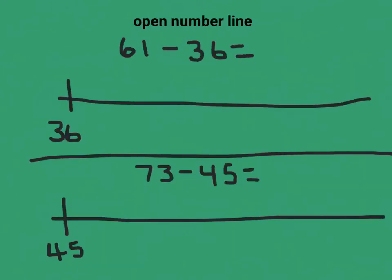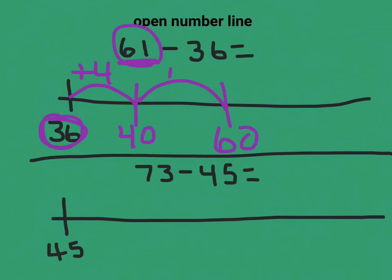Here's another way to solve a subtraction problem on an open number line. On this one, we're going to start at 36 and jump up to 61. So I'm going to use friendly tens to get there. When I think about 36, I think to myself, what's the next 10? The next 10 is 40, and I jumped four to get there. I'm trying to get to 61. So now I'm at 40. I can jump 20 more, and that places me at 60. If I jump one more, I've reached my goal number which is 61. I go back and count all of my jumps. So my jumps are 20 and 4, that's 24, and one more is 25. The answer is 25.